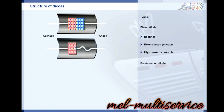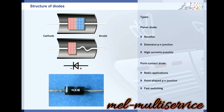On point contact diodes, the point of a metal wire is fused to an n-type semiconductor plate. A small point-shaped p-type region forms around the point of the metal. This type of diode is used, for example, in radio applications and allows fast switching. The electrical symbol for a diode indicates that current can only flow in one direction. The arrow shows the direction of conventional current. The bar on the cathode represents the n-type silicon plate and is also marked on the housing of the diode.